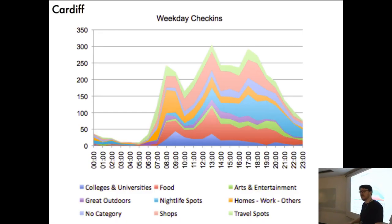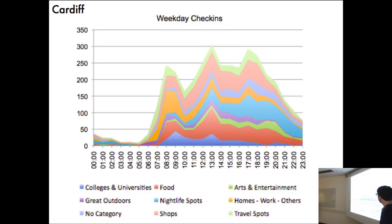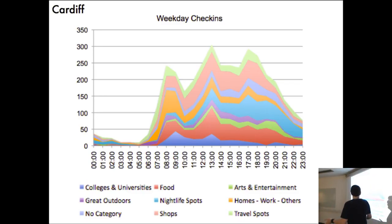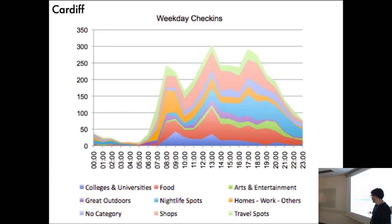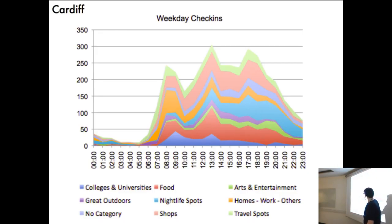This is a typical weekday in Cardiff in terms of Foursquare check-ins. There's a big spike in the morning as people get up — checking in at home or work, some going for breakfast, people starting to shop. There's a big spike at lunchtime in the food category as people go out for lunch. Then a spike in the evening as people go out for an after-work drink in nightlife spots, which carries on throughout the evening. Colleges and universities show a spike in the morning and afternoon.